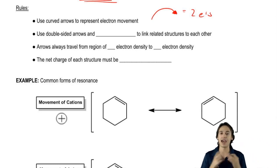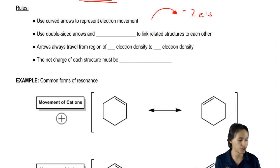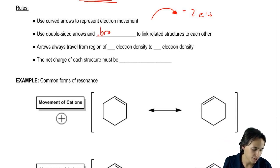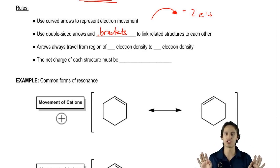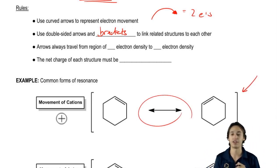What we're going to do is after we've built our resonance structures, we're going to use double-sided arrows and brackets to link related structures together. That means that once I figure out my resonance structures, I link them together using those double-sided arrows and then brackets.